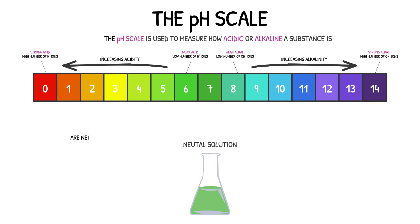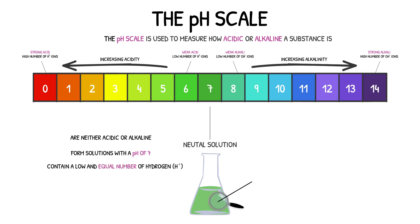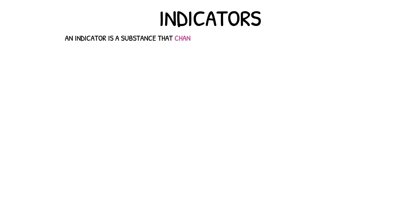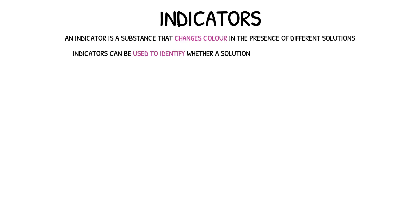Neutral solutions are neither acidic nor alkaline and form solutions with a pH of 7. They contain a low and equal number of hydrogen and hydroxide ions. The pH of a solution can be found by using indicators — an indicator is a substance that changes colour in the presence of different solutions and can be used to identify whether a substance is acidic, alkaline or neutral.